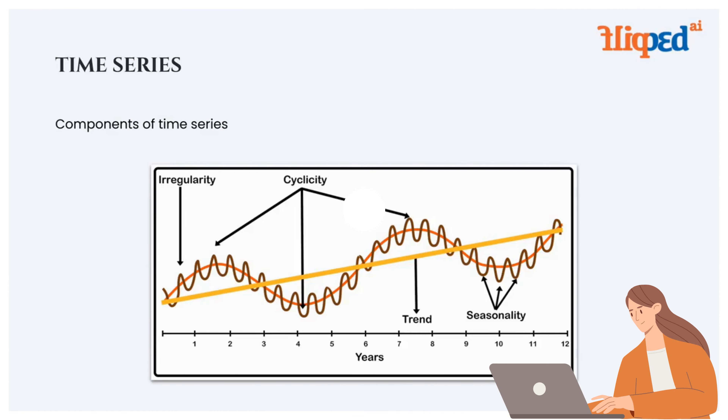Time series data is a sequence of observations collected over time. These observations can be influenced by various factors such as trend, seasonality, cyclical patterns, and irregularities. These factors are known as components of time series, and understanding these components is essential.